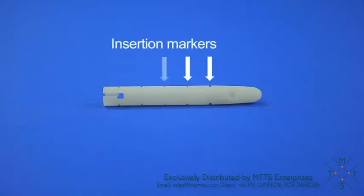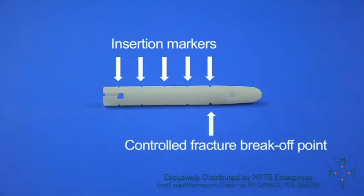There are five one-centimeter insertion markers for easy identification of insertion depth from the center of the capsule hole. The first marker is also a controlled fracture break-off point to enable easy access for retrieval of the specimen.